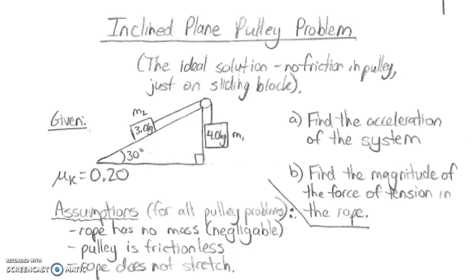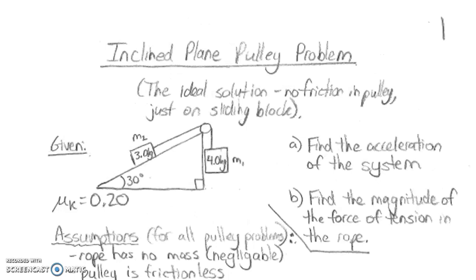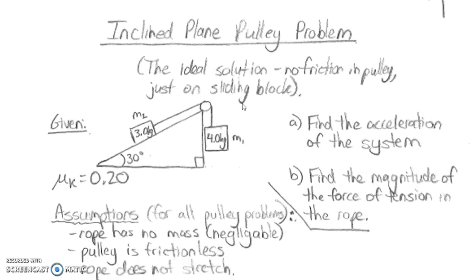The ideal solution we're going to look at here assumes that there's no moment of inertia calculation on the pulley itself. We're assuming it's a frictionless pulley, we're assuming there's some friction acting on the block, and the string doesn't stretch, has negligible mass. The question gives us masses of 3 kilograms and 4 kilograms, a coefficient of kinetic friction, an angle of inclination of 30 degrees, and asks us to find the acceleration of the system and the magnitude of the tension in the rope.